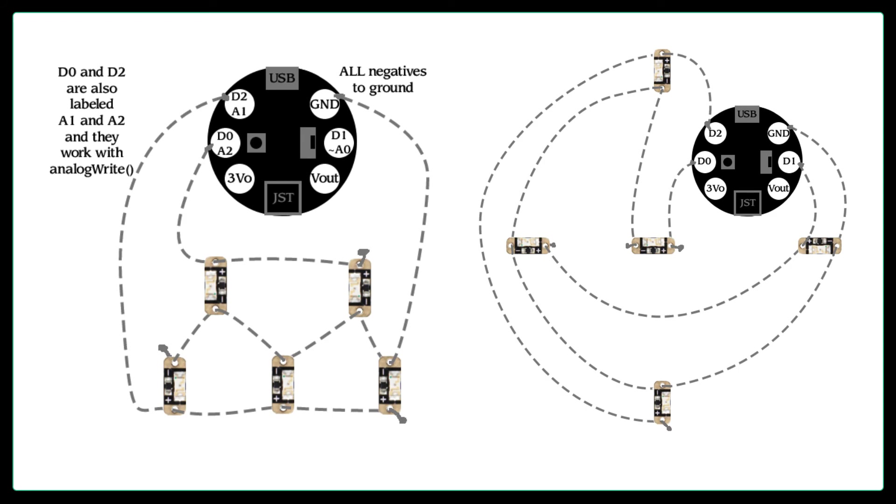On the right hand side, you'll see a slightly more complicated diagram that uses all three output pins. D0 goes to the center LED and the other LEDs are split between the other two output pins. In both cases, it's important to note that all of the negative terminals of the LEDs are connected to ground. You can follow from the ground pin out to see how it is connected to all of the negative terminals.